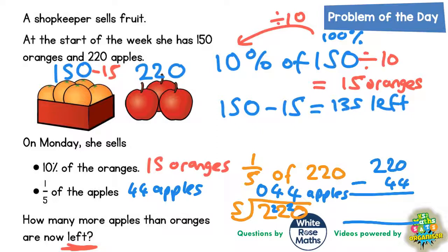0 take away 4 we can't do, so we'd have to borrow from the 2 and the 2 becomes a 1. And the 1 we've borrowed makes that 0 into 10. 10 take away 4 is 6.